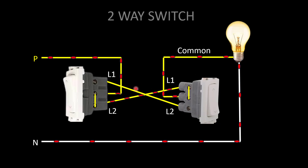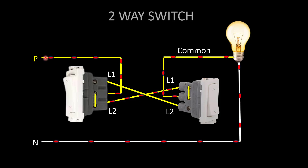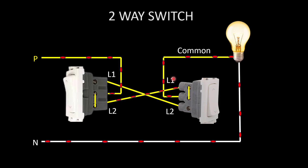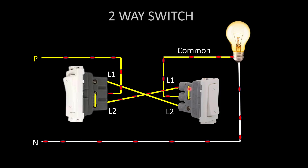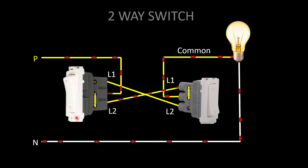In the fourth scenario, switch one is on and switch two is off — the light will be on. Phase comes to the common, and since switch one is on, common and L2 are in contact. Through L2, the current goes to L1 of the second switch. Since switch two is off, common and L1 are in contact, so through the common terminal it goes to the light and the light is on. These are the four operating combinations possible using a two-way switch.